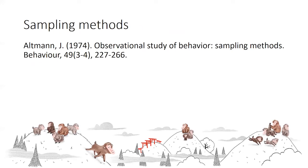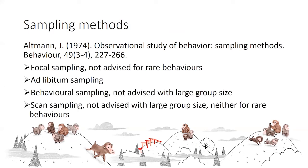You have to use the right sampling methods — I think you all know the different sampling methods detailed in Altmann. Focal sampling is not advised for rare behaviors, but it can be good when you have a high number of individuals to observe, if you have time. Ad libitum sampling is often used for rare behaviors, though you cannot control for which individual you observe or how much time, but as the earlier study showed, it can be quite a good method.